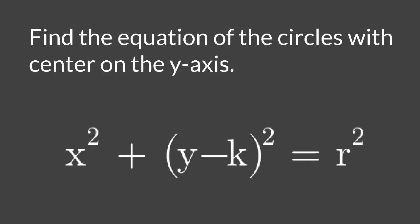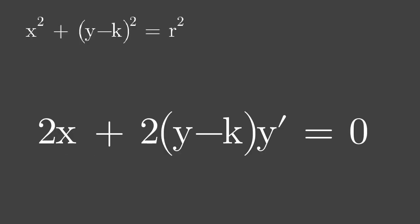Please differentiate the equation up to second derivative because it has two arbitrary constants which are k and r. This is the first derivative. The arbitrary constant r is eliminated. Divide both sides of the equation by 2 to simplify the next differentiation.